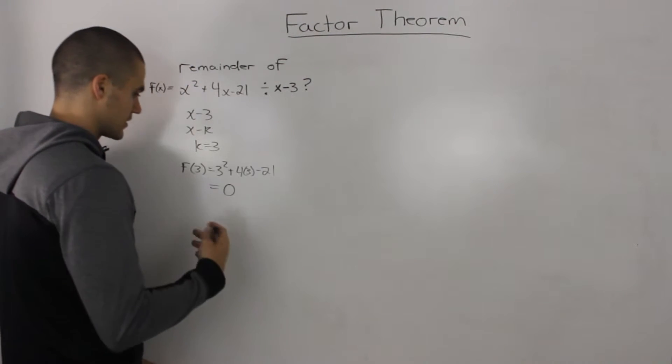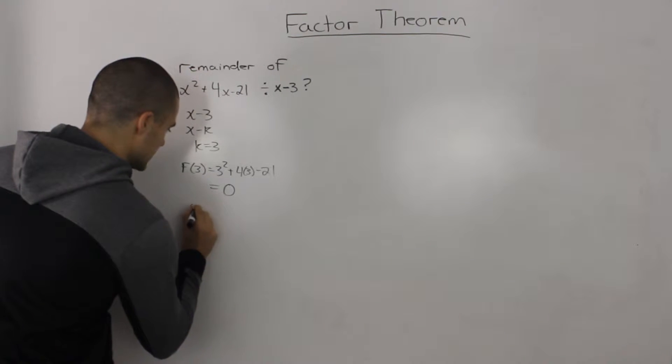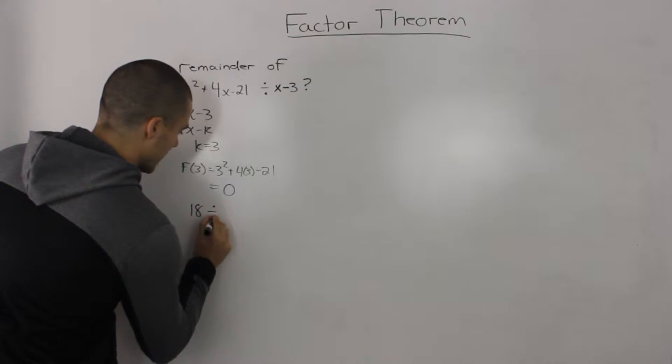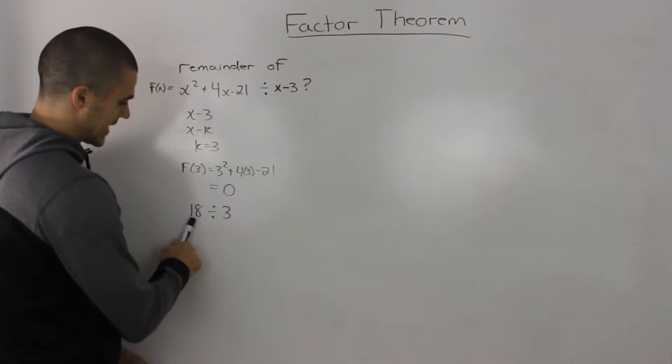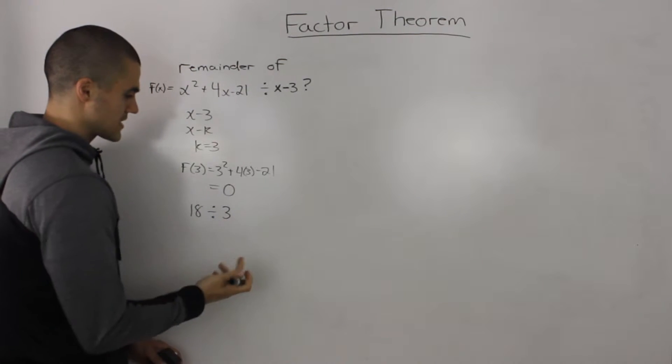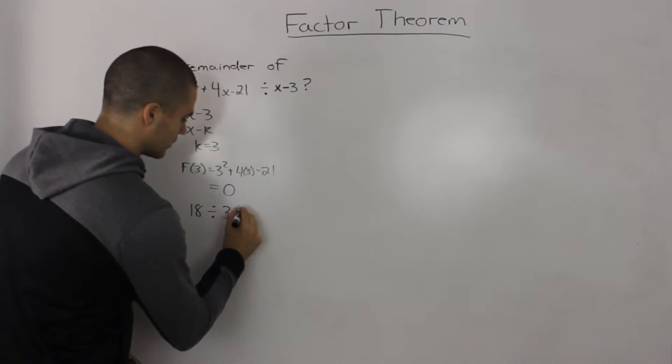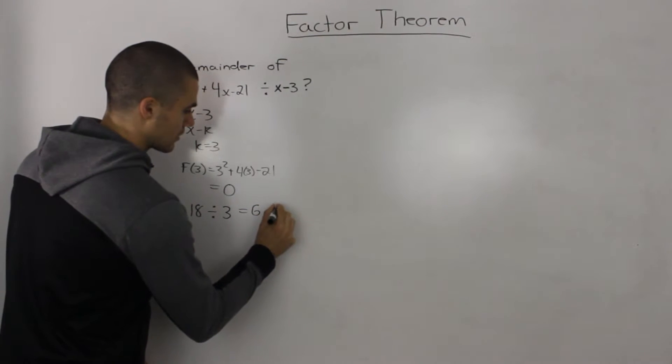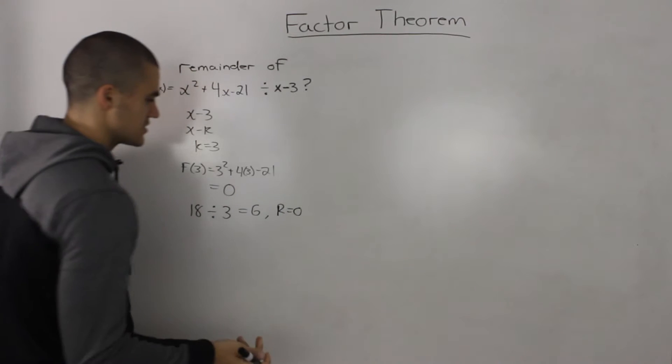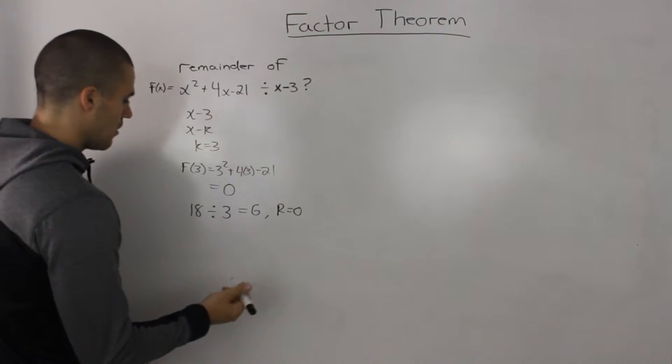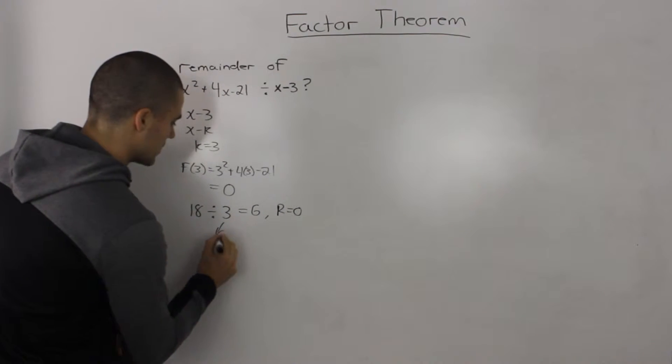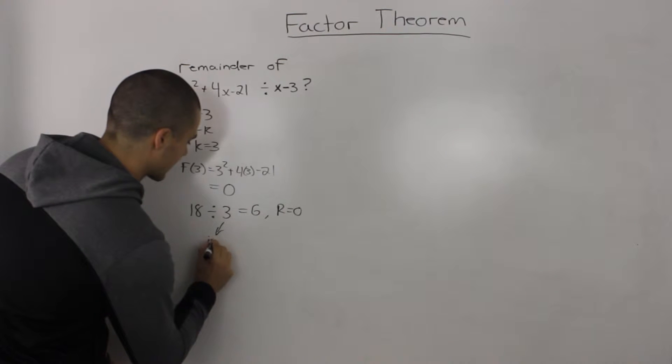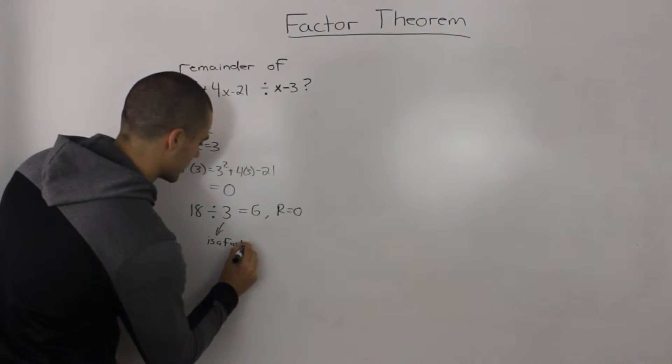Let's do an even more simple example. Say we take 18 and divide it by 3. So 18 is our dividend and 3 is our divisor. 18 divided by 3 is 6, and the remainder is 0. So all that means is that 3 is a factor of 18.